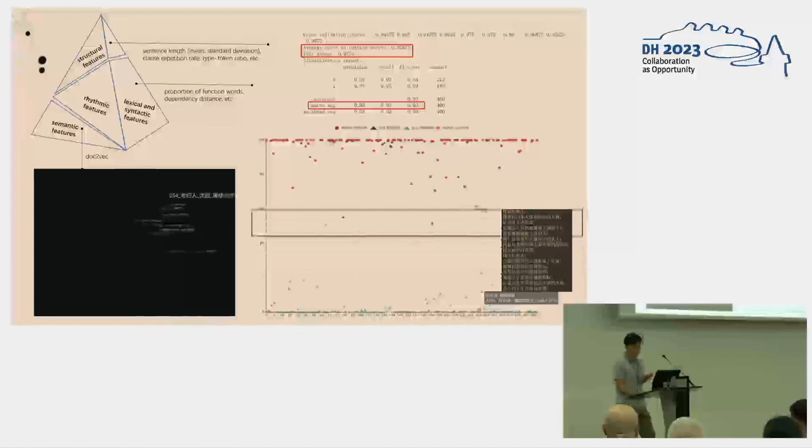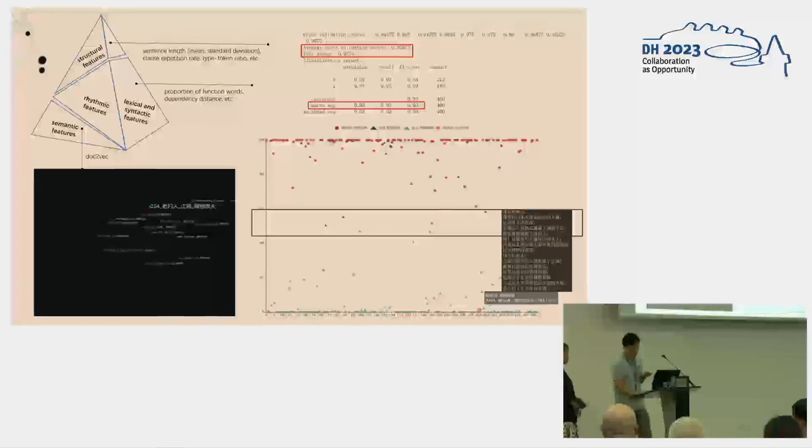Additionally, the graph can help to identify controversial works. For instance, consider the piece below, which was marked as a prose poem when published, but the model classified it as a neo-poem. Also, consider the samples located in the middle boundary area. By close reading, we can deepen our understanding of rhythmic distinction and genre recognition in modern Chinese poetic literature.